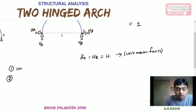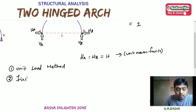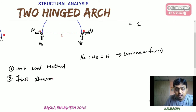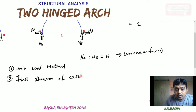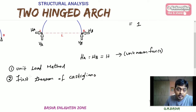One method is the unit load method, and another is the first theorem of Castigliano. Please remember these two methods are used for finding the expression for the horizontal thrust.